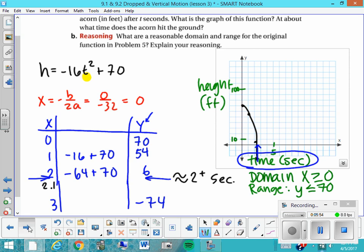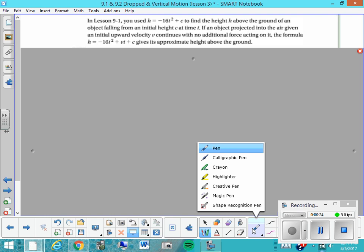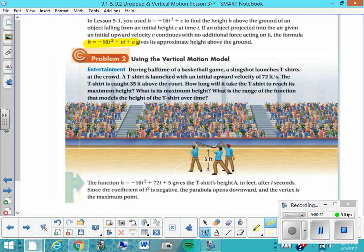Okay, let's try a different one. Okay, this one says, if you used h equals negative 16t squared plus c to find the height above ground of a falling object from an initial height c, this time we're going to talk about when an object is projected into the air given an initial upward velocity v. Continues with no additional force on it, so no air resistance. The formula h equals negative 16t squared plus vt plus c gives its approximate height above the ground. So let's work on this together. Or actually, let's just read through this one together.